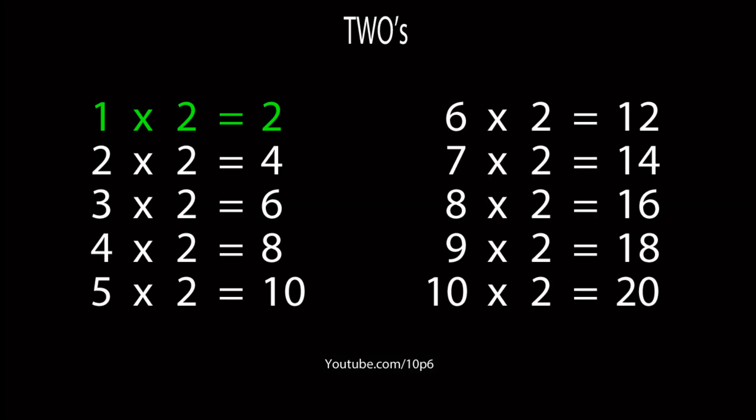2s. 1 2 is 2, 2 2s are 4, 3 2s are 6, 4 2s are 8, 5 2s are 10, 6 2s are 12, 7 2s are 14, 8 2s are 16, 9 2s are 18, and 10 2s are 20.